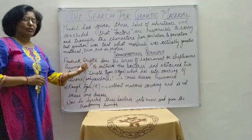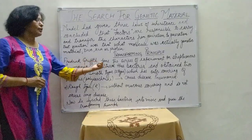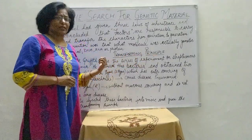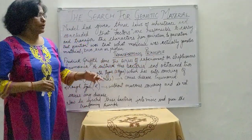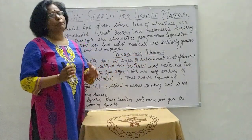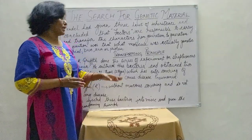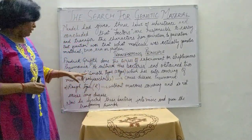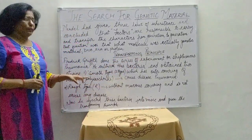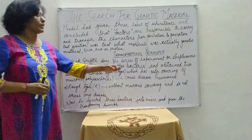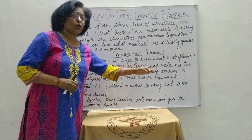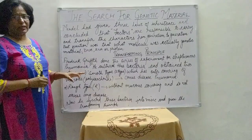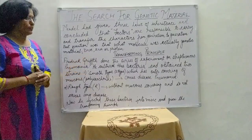One of those scientists was Frederick Griffith. He did a series of experiments on Streptococcus bacteria and gave a principle called the transforming principle. For this experiment, he cultured the bacteria and obtained two strains of Streptococcus bacteria.